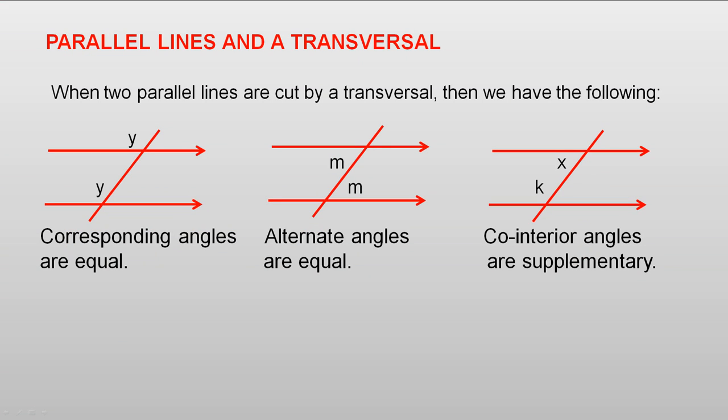Parallel lines and a transversal. When two parallel lines are cut by a transversal, then we have the following. The corresponding angles are equal. So Y and Y, those two angles are equal, and they're called corresponding angles.